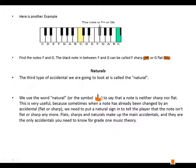The third type of accidental we're going to look at is called the natural. We use the word 'natural' or the symbol to say that a note is neither sharp nor flat. This is very useful because sometimes when a note has already been altered by an accidental, flat or sharp, we need to put a natural sign to tell the player that the note isn't flat or sharp anymore. Flats, sharps, and naturals make up the main accidentals, and they are the only accidentals you need to know for grade one music theory.